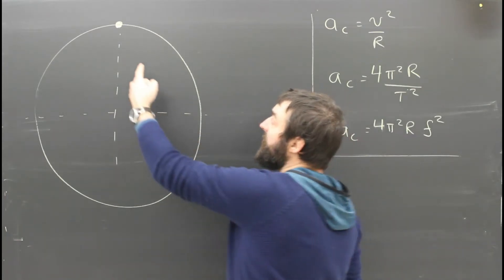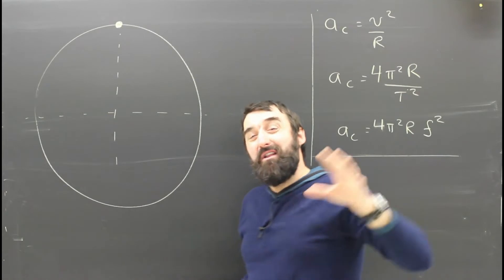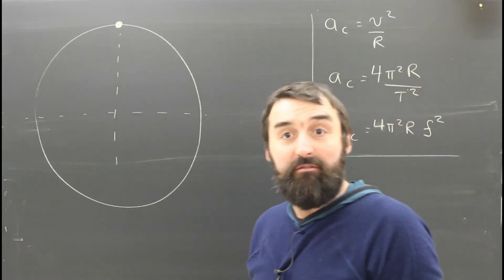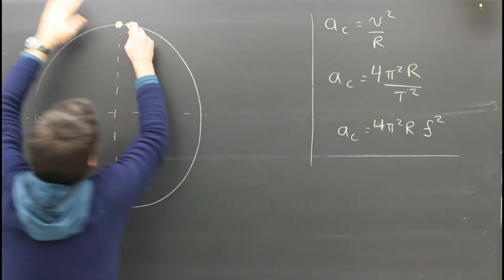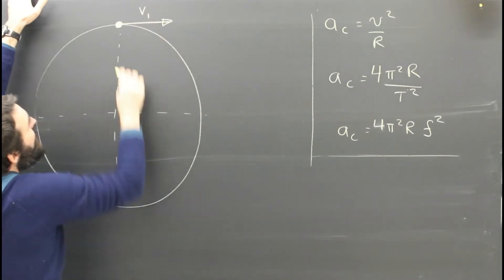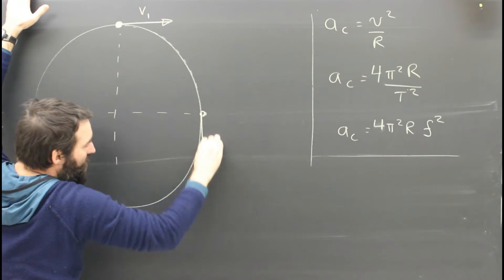So imagine an object going in a circle at a constant speed. You might think it's not accelerating because its speed isn't changing. V1 is going to be equal to V2. But here, it's going to the right. After a while going around the circle, at this point, it's going down.